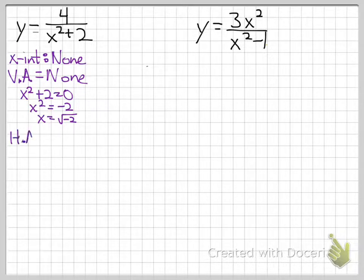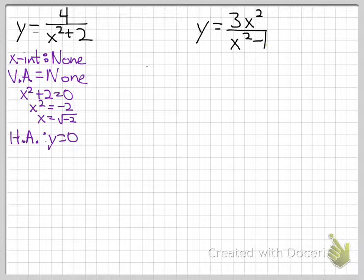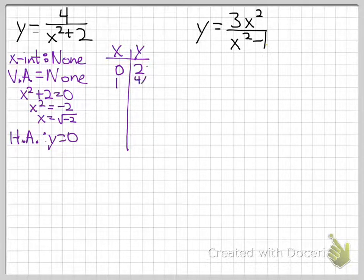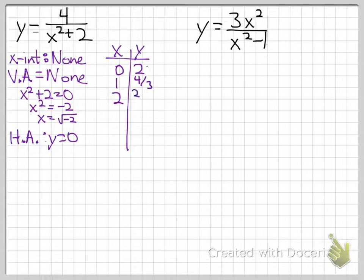For the horizontal asymptote, the degree on the bottom is greater than the top, so y equals 0 is the asymptote. Plugging in x equals 0 gives 4 over 2, which is 2. Plugging in x equals 1 gives 4 over 3. Plugging in x equals 2 gives 4 over 6, which is 2 thirds. Plugging in x equals 3 gives 4 over 11. The values get smaller, and negative x values give the same results as their positive counterparts.